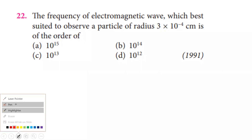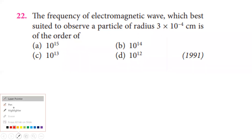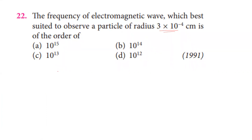The frequency of an electromagnetic wave best suited to observe a particle of radius 3×10⁻⁴ cm is of what order? To observe the particle, the diffraction phenomenon requires that the wavelength of the wave must be approximately equal to the size of the particle. So the wavelength is equal to 3×10⁻⁴ cm, which equals 3×10⁻⁶ meter.